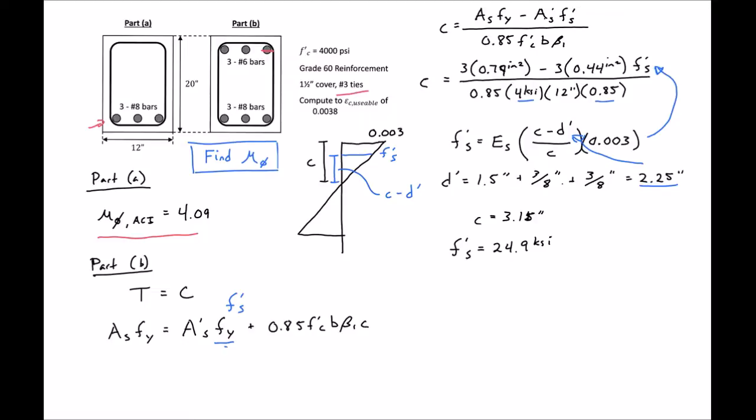So finally, we can find our curvature, phi sub n, which is just our ultimate strain, 0.003 divided by our C of 3.15 inches. This will give us a curvature of 9.52 times 10 to the negative 4th radians per inch.